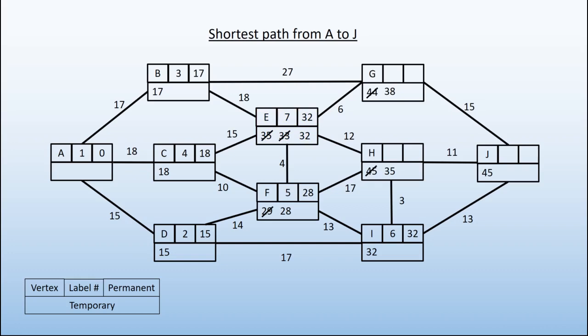Our next lowest vertex without a permanent label is H on 35. This is vertex 8. Permanent label becomes 35. And we can't do any better for J at the moment. The 35 plus 11 would be 46. That's no good. We'll leave the 45. That's H complete.